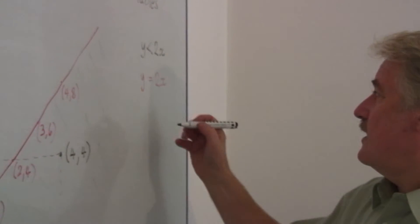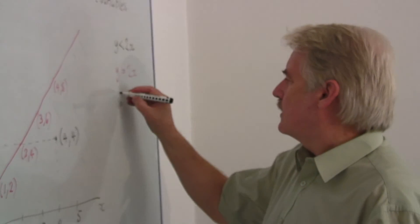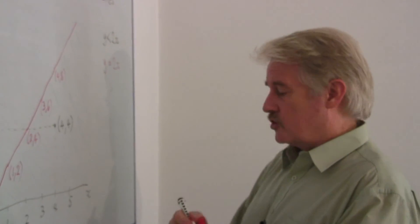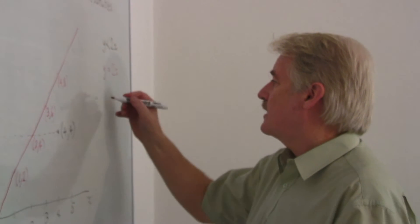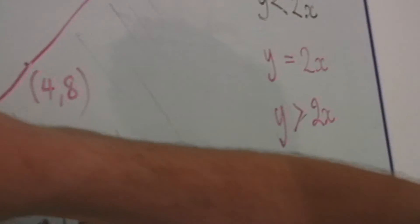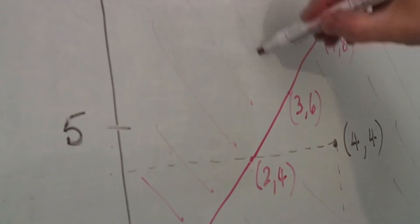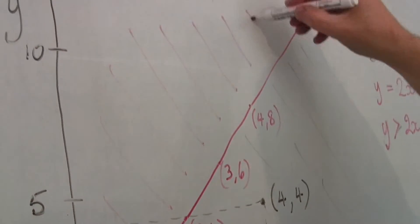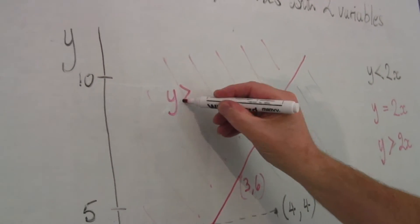Conversely, if I now have y greater than two x, I'll put it down here in red. Y is greater than two x. Obviously, the area is going to be above the line. So that is y is greater than two x.